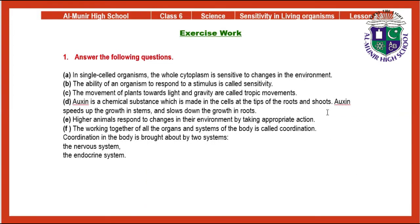Now we have the solved exercise for Unit Number 3. Question 1 answers: In single-cell organisms, the whole cytoplasm is sensitive to change in the environment. The ability of an organism to respond to a stimulus is called sensitivity. The movement of plants towards light and gravity are called tropic movements. Auxin is a chemical substance made in the cells at the tips of roots and shoots; it speeds up growth in stems and slows down growth in roots. Higher animals respond to change in their environment by taking appropriate action. The working together of all the organs and systems of the body is called coordination, which is brought about by two systems: the nervous system and the endocrine system.